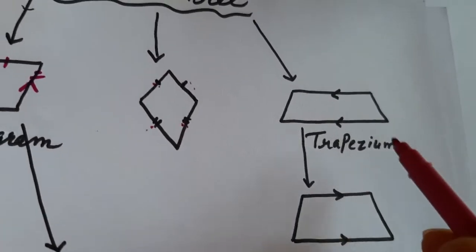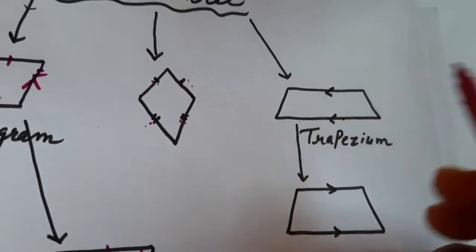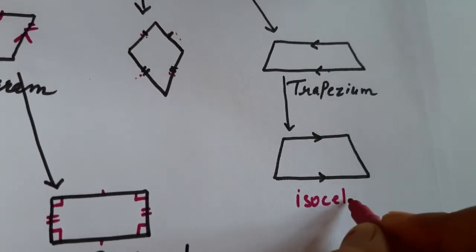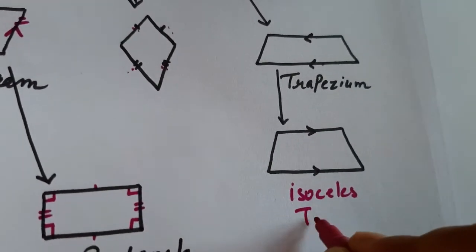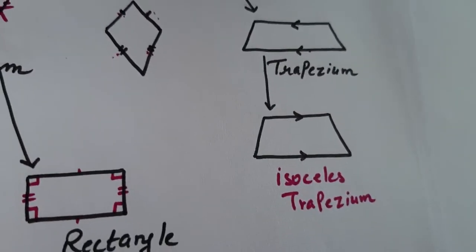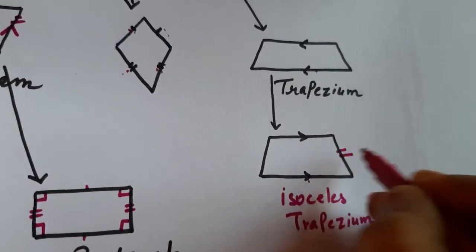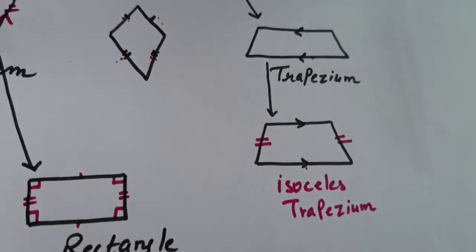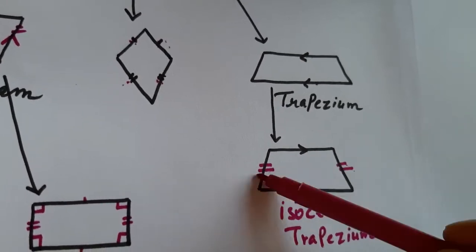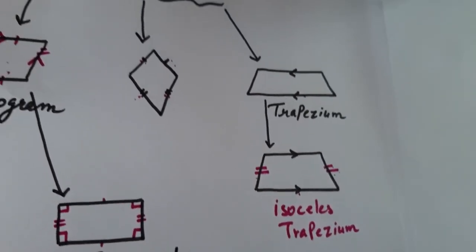Next is the trapezium. In a trapezium, only one pair of sides is parallel to each other. Its special case is the isosceles trapezium. In an isosceles trapezium, the opposite sides are parallel and the non-parallel sides are also equal.